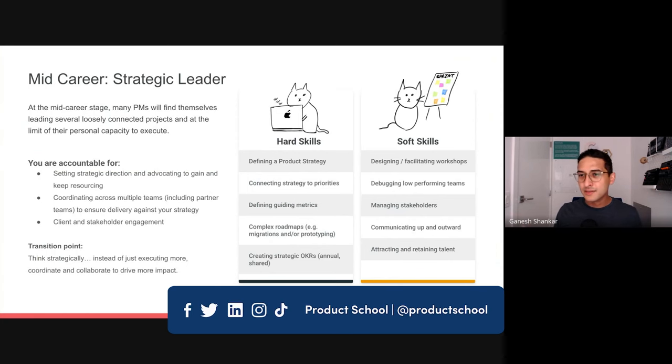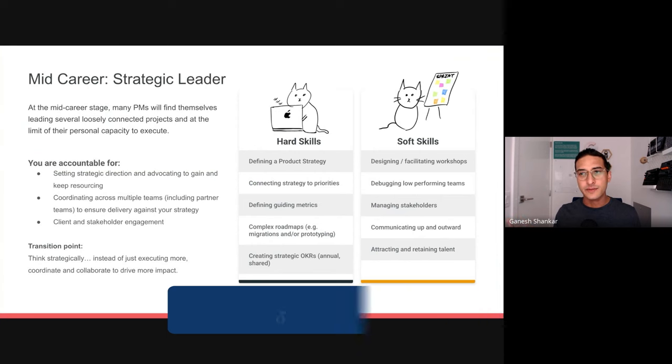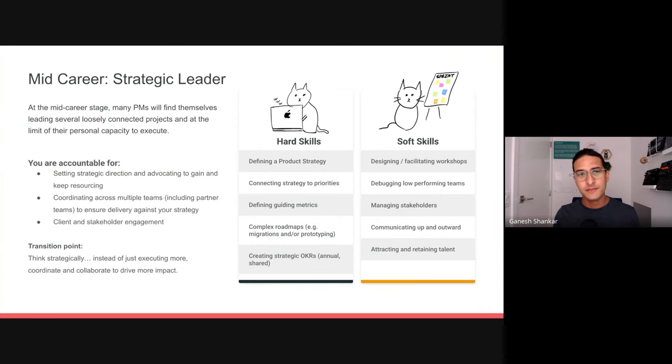The interesting thing about leading across teams is that you immediately can tell the difference between a higher performing and a lower performing team. So part of your job starts becoming looking into why teams are lower performing and then how to actually get them out of that mode. You're going to manage a much more complex list of stakeholders, probably in and around you in the organization. And so that also involves getting really good at communicating succinctly up and outward in ways that make sense to them.